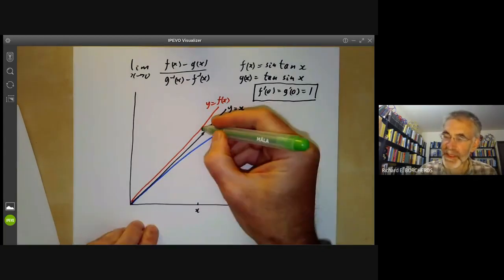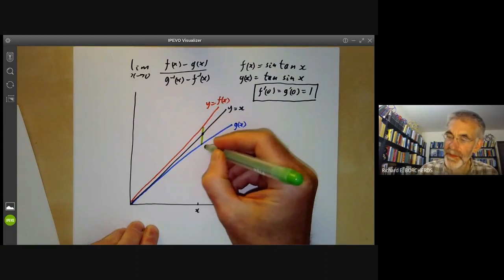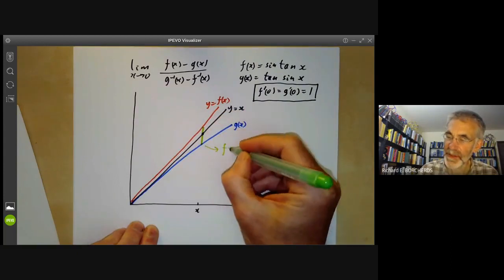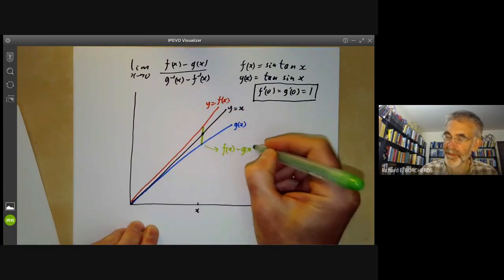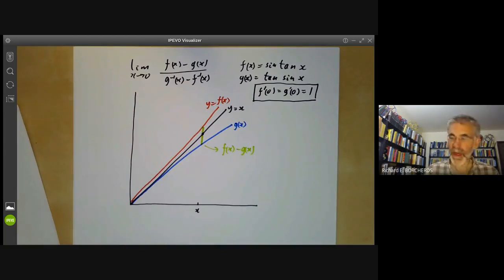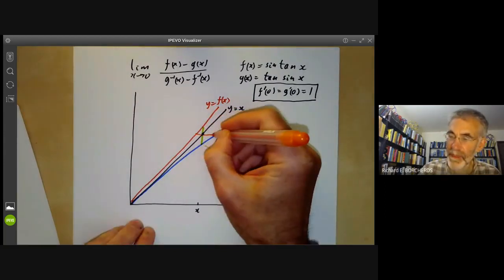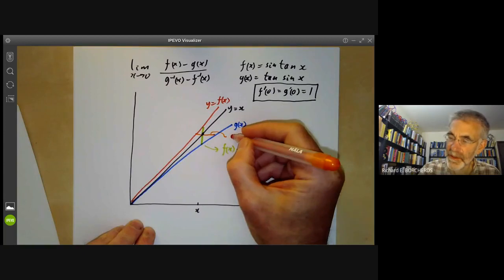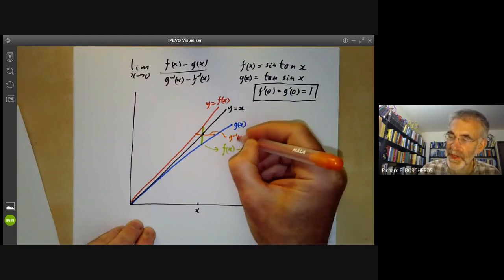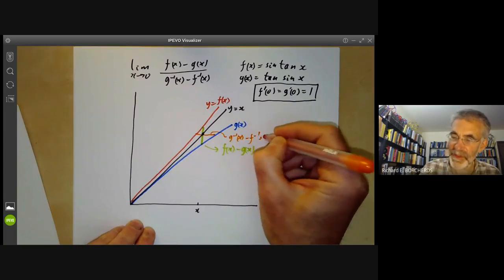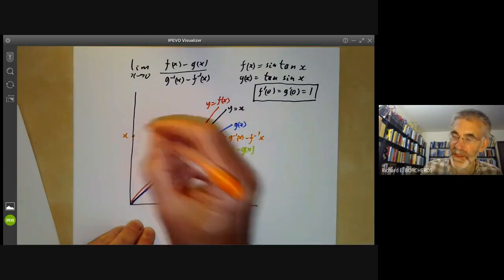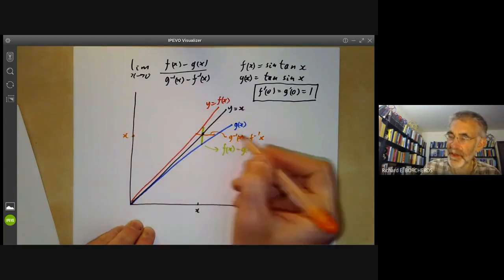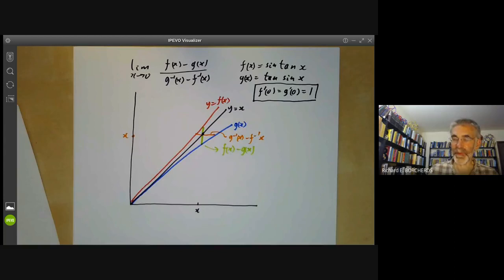So this is going to be our point x. I look at this distance here. This distance here is just f(x) minus g(x). And I can look at this distance here. This is g inverse of x minus f inverse of x.